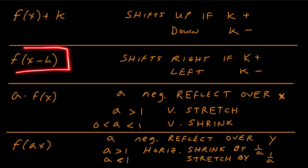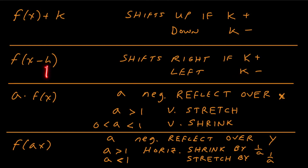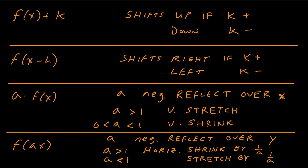The next rule is f(x - h). Notice h is grouped with x — it's in parentheses, underneath the square root, or inside the absolute value bars. It's going to shift right if h is positive, left if h is negative. Students sometimes get confused because if you had f(x - 3), that actually shifts right three, and f(x + 3) shifts left three. So when it's grouped with x, it has the opposite effect from the sign.